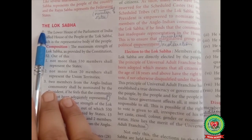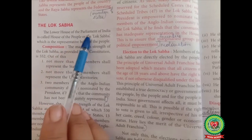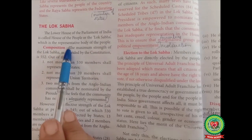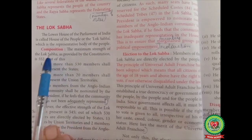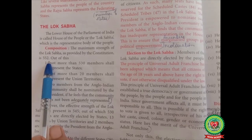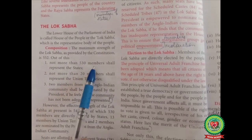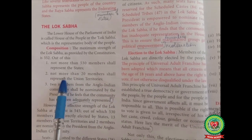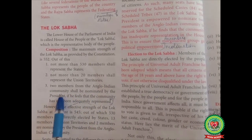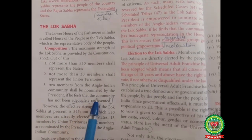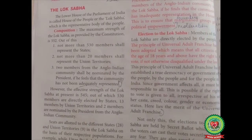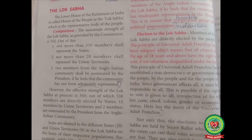Now open your books. Topic: The Lok Sabha. The lower house of the parliament of India is called the house of the people or the Lok Sabha, which is the representative body of the people. The maximum strength of the Lok Sabha as provided by the constitution is 552. Out of this, not more than 530 members shall represent the states, not more than 20 shall represent union territories, and two members from the Anglo-Indian community shall be nominated by the president if the community has not been adequately represented.